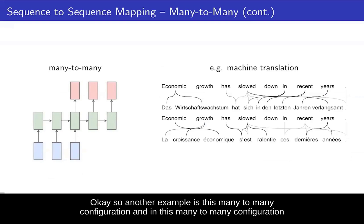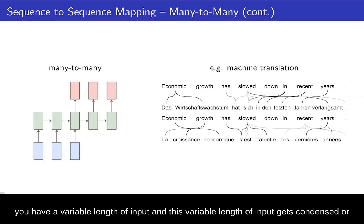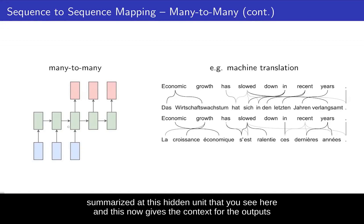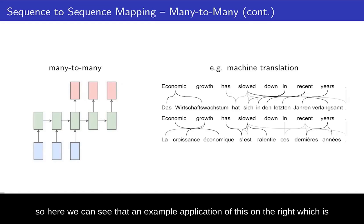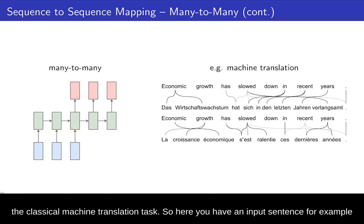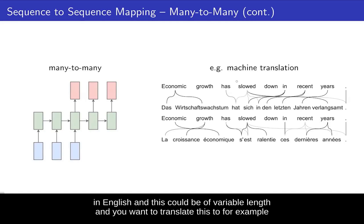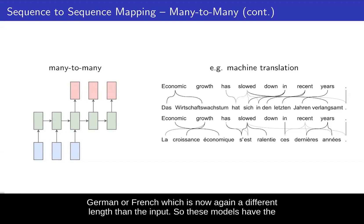Another example is a different many-to-many configuration, where a variable length input gets condensed or summarized at a hidden unit, which then provides the context for the outputs at a later stage — which is also a sequence. An example application of this is the classical machine translation task. You have an input sentence, for example in English, which could be of variable length, and you want to translate this to, for example, German or French, which may be a different length than the input.